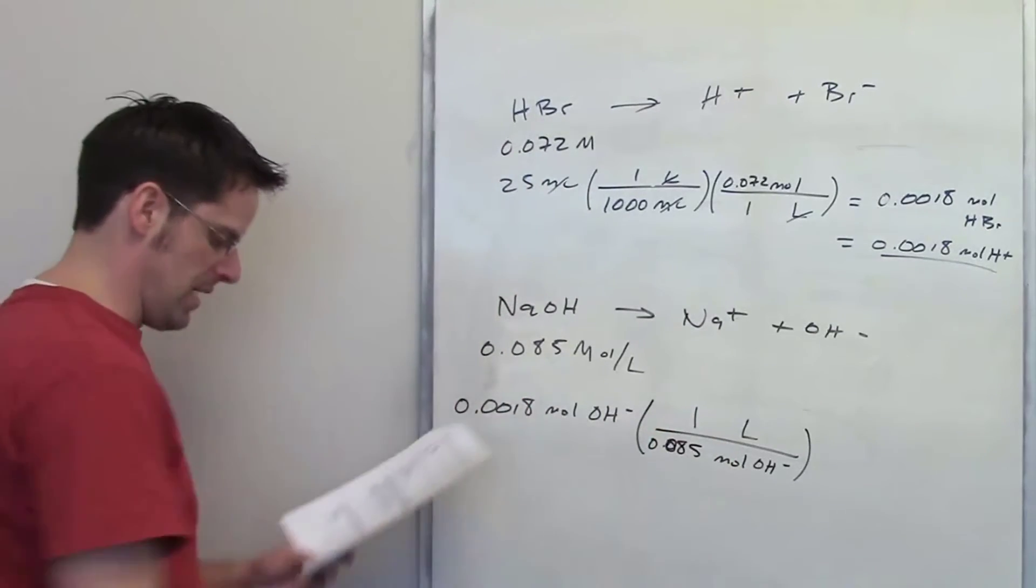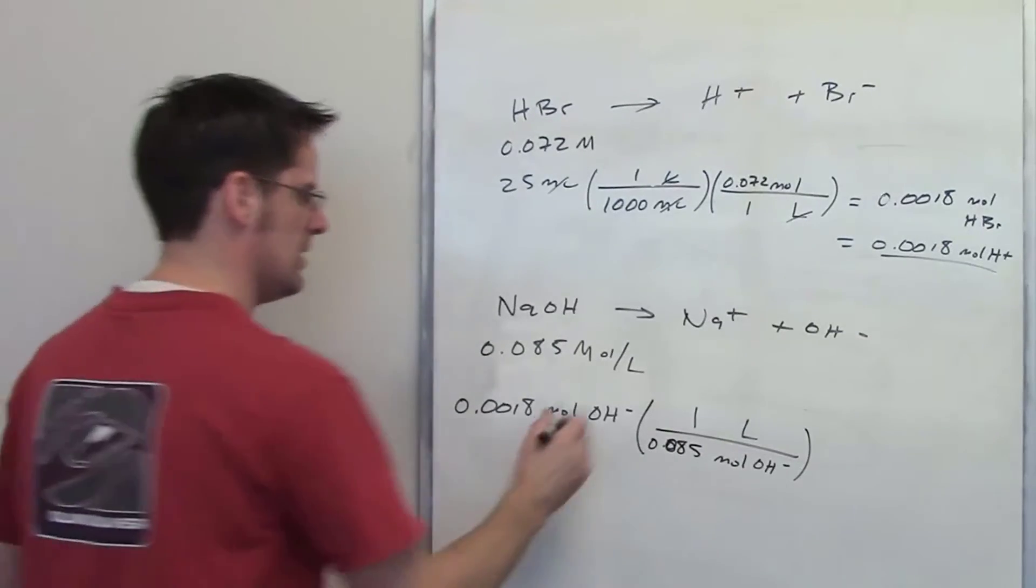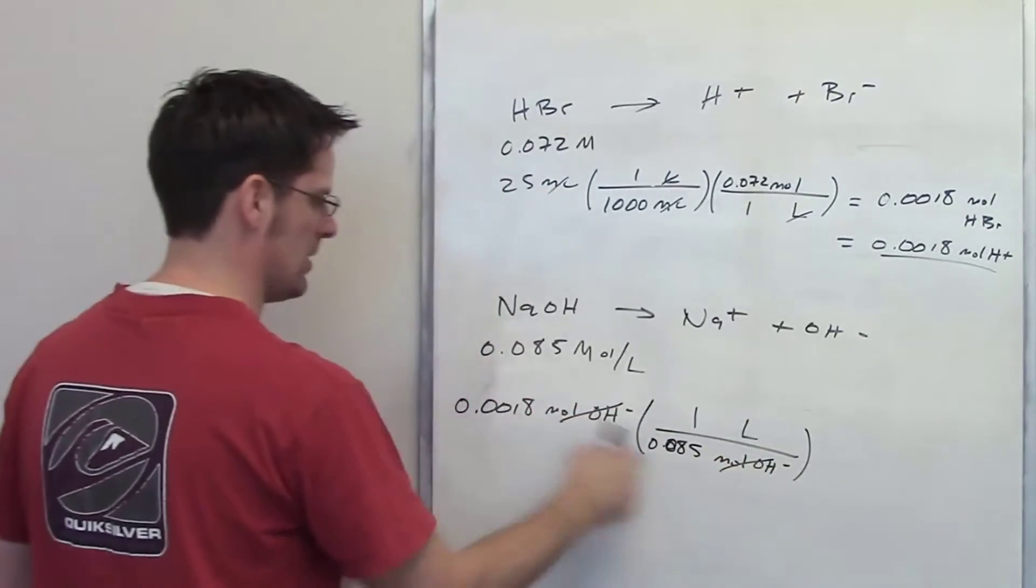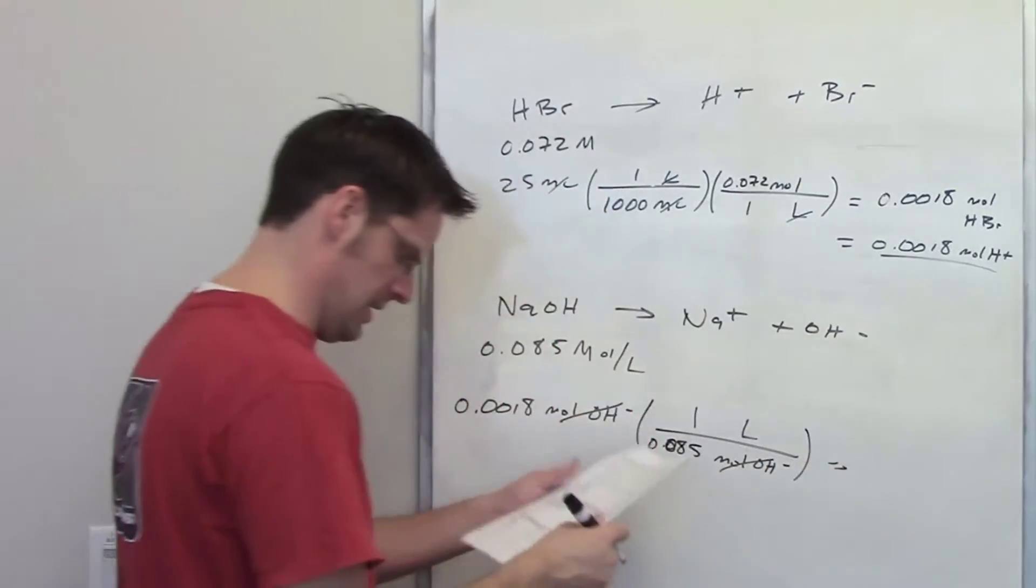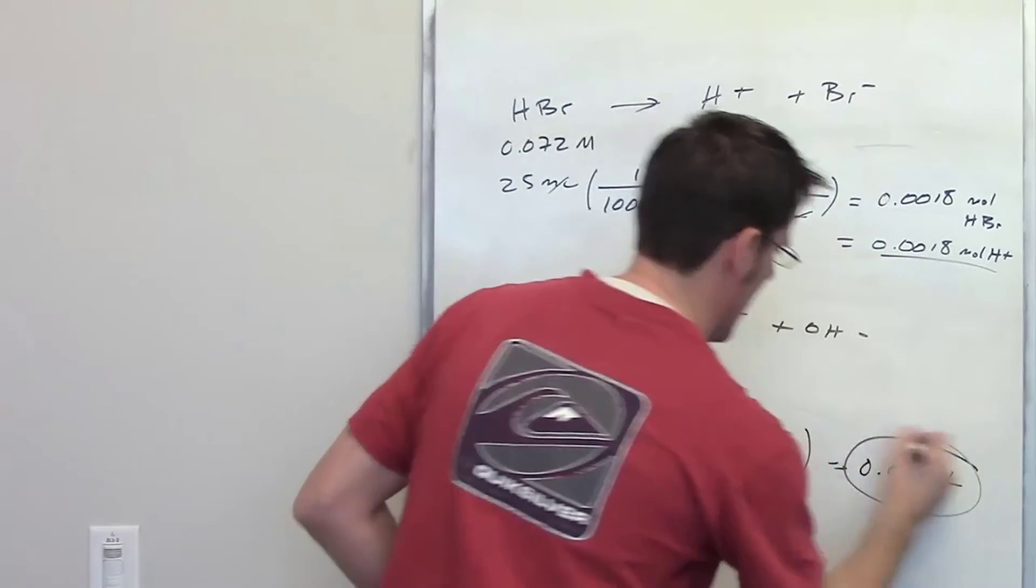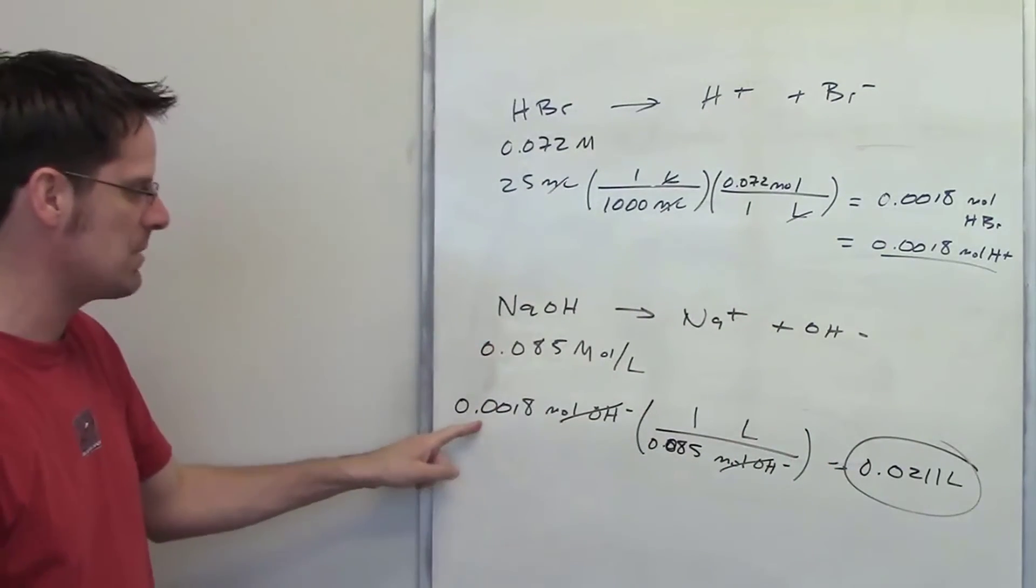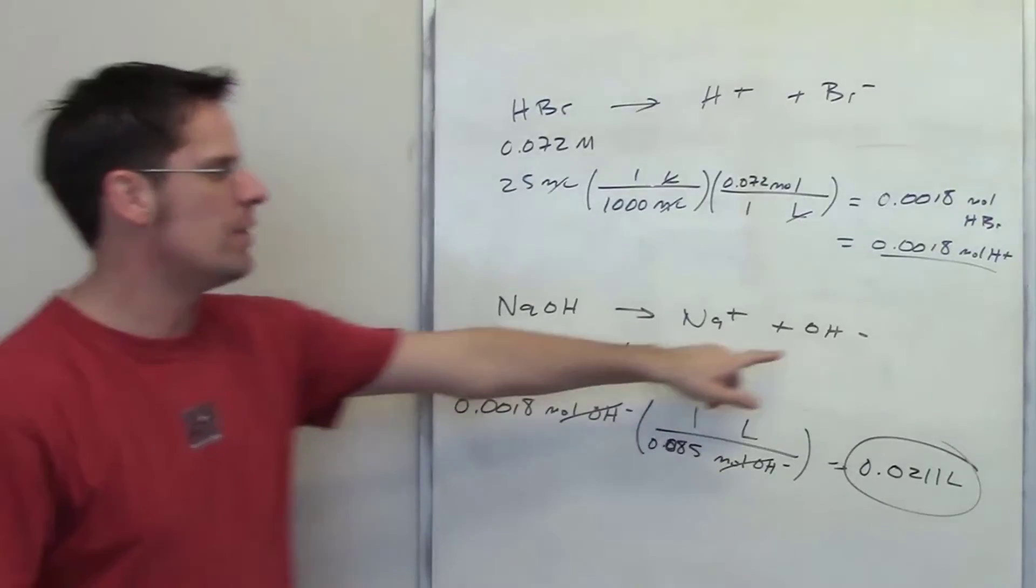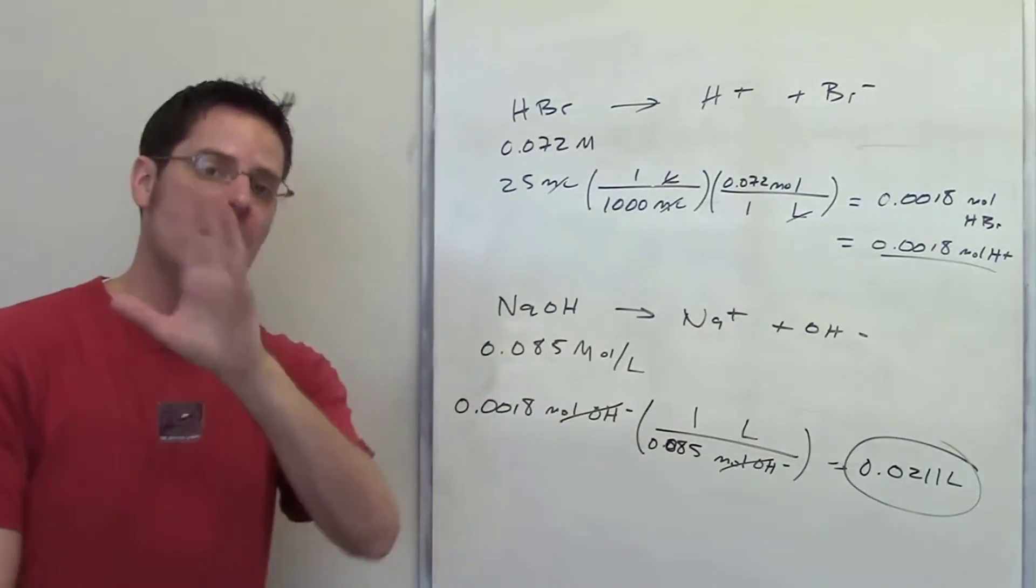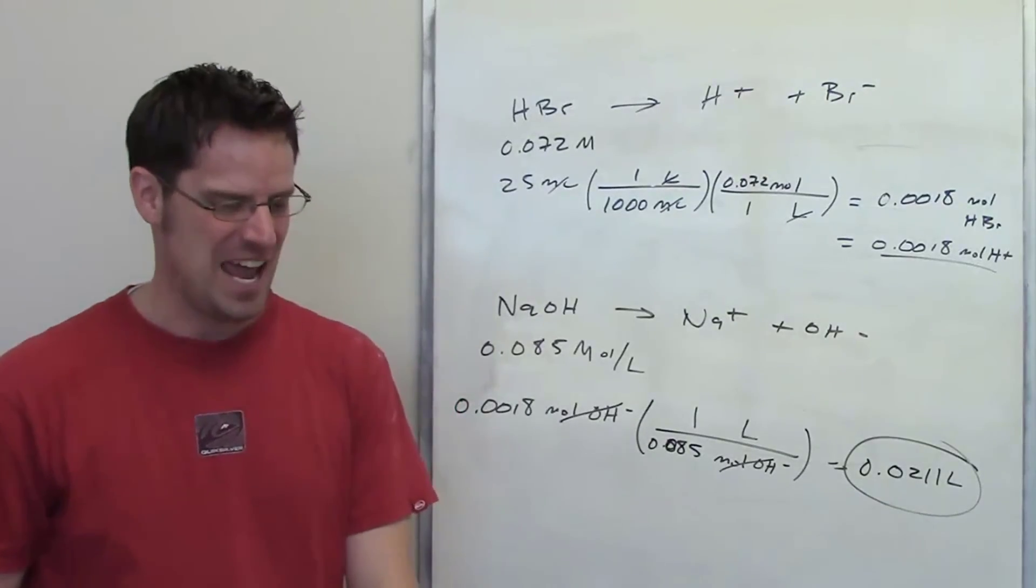If I do this math, that's going to tell me exactly how many liters I need. The moles of hydroxide cancel each other out, and the final answer that I end up getting is 0.0211 liters. That is the amount of sodium hydroxide at this concentration you need to add to get exactly 0.0018 moles of hydroxide at the other end and thereby cancel out that exact number of moles of H+.